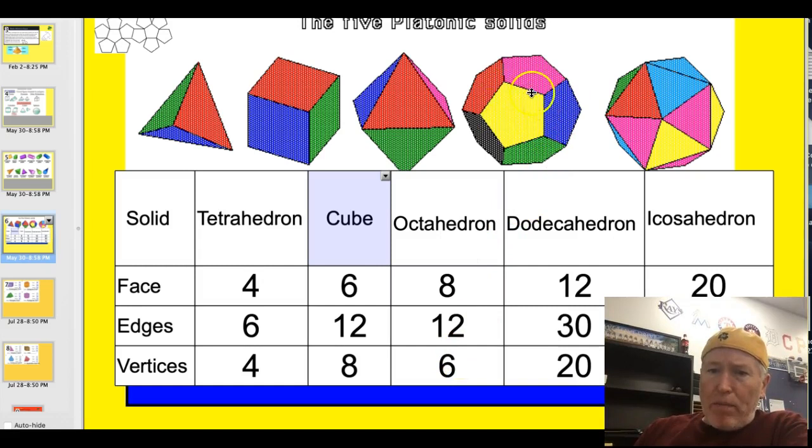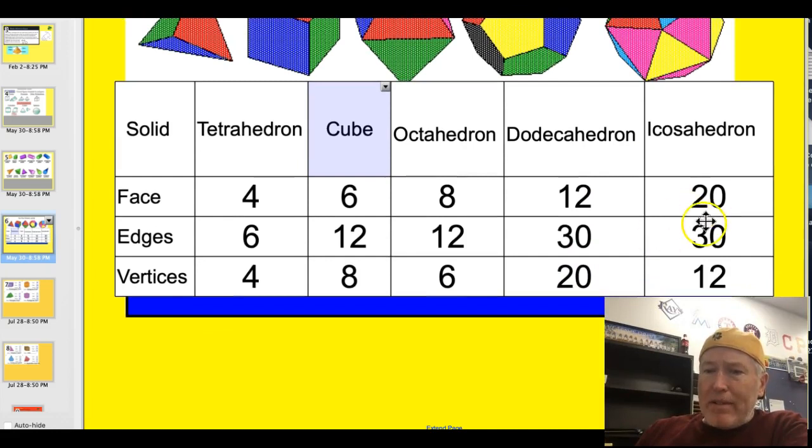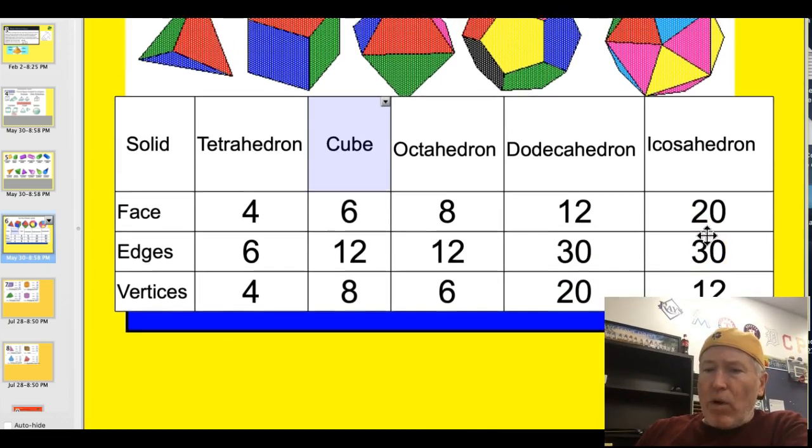Here's the dodecahedron made with pentagons. Twelve faces, 30 edges, 20 vertices. And the icosahedron, 20 faces, 30 edges, and 12 vertices.